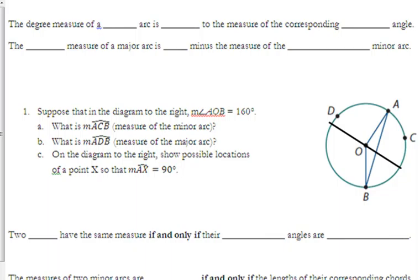The degree measure of a minor arc is equal to the measure of the corresponding central angle. The degree measure of a major arc is 360 degrees minus the measure of the corresponding minor arc.